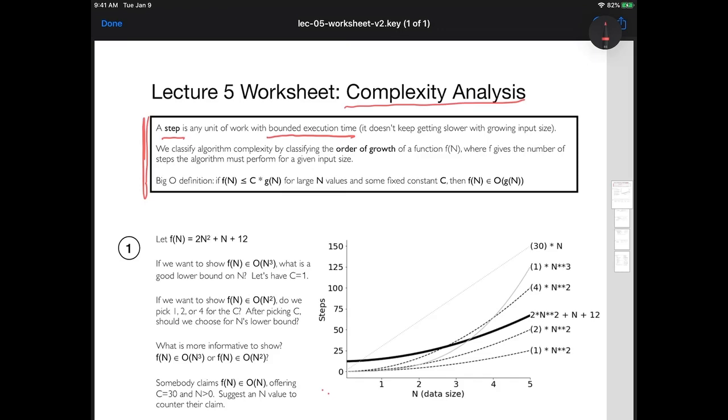So what does this mean to have bounded execution time? Well, look what I'm not saying. I'm not saying constant execution time. It's totally possible that a step is sometimes fast and sometimes slow. What does bounded mean? Bounded means there's some sort of worst case, and it'll never be worse than that worst case, even if the input size keeps growing.